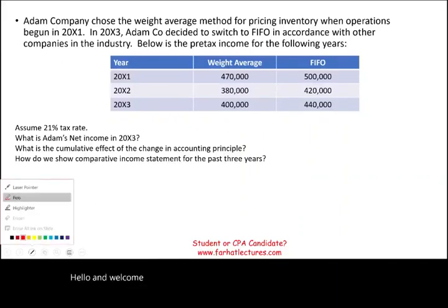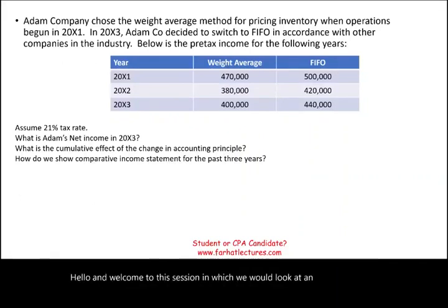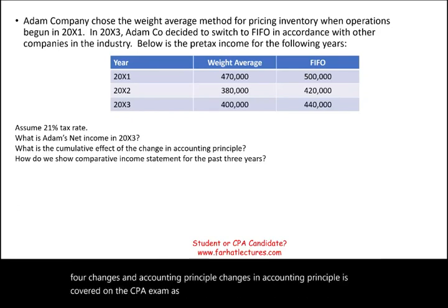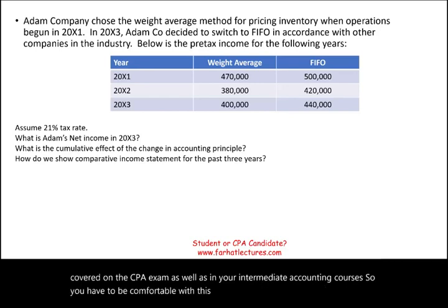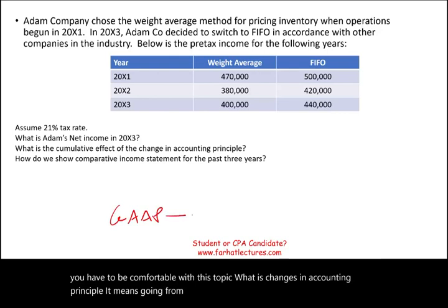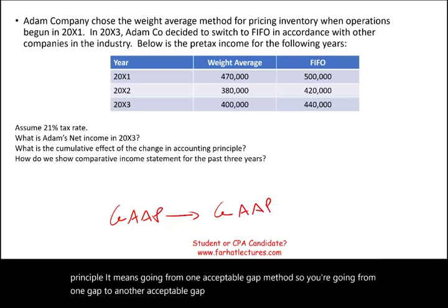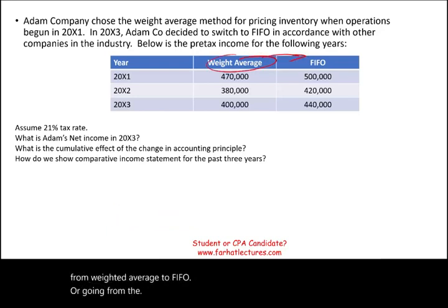Welcome to this session on changes in accounting principle, covered on the CPA exam and in intermediate accounting courses. Changes in accounting principle means going from one acceptable GAAP method to another acceptable GAAP method. An example would be going from weighted average to FIFO, or going from the percentage of completion method for revenue recognition to the completed contract method. They're all GAAP methods.